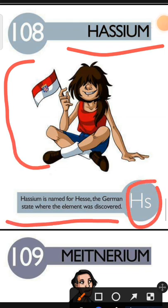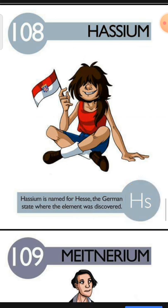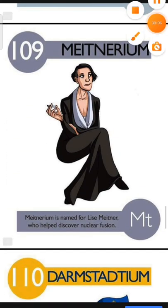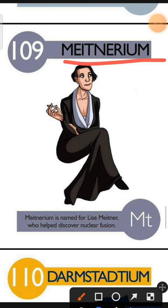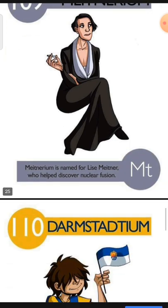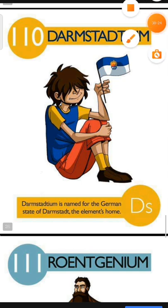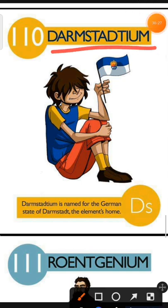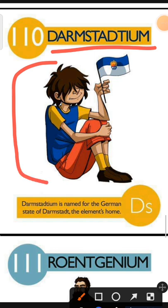Element number 109 is Meitnerium. The characteristic of Meitnerium is: Meitnerium is named for Lise Meitner who helped discover nuclear fission. Element number 110 is Darmstadtium. The characteristic of Darmstadtium is: Darmstadtium is named for the German city of Darmstadt, the element's home.